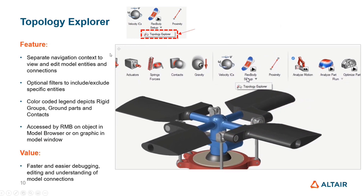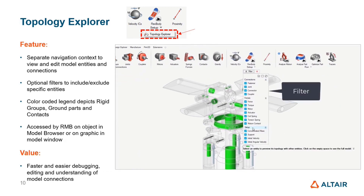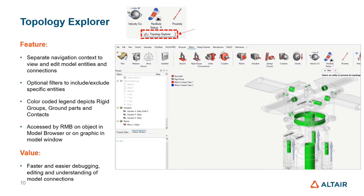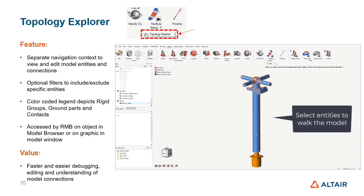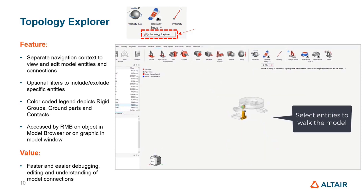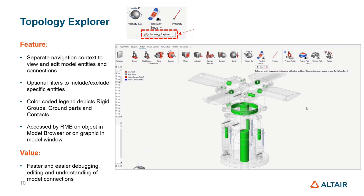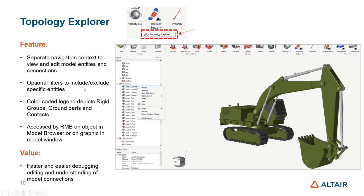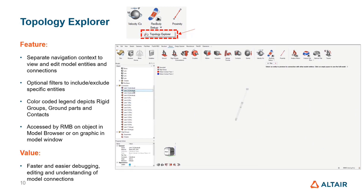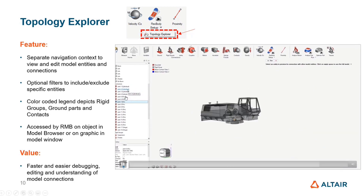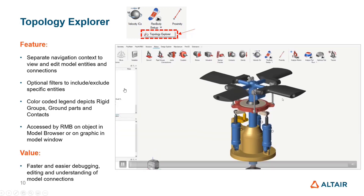We also have a new feature called the Topology Explorer. This allows you to graphically navigate the model and look at different connections. You can filter different entity types and see color coding for rigid groups, ground parts, and so on. Clicking on parts highlights associated entities. You can also click springs, actuators, and other elements to see the model structure. This is a great debugging tool for large models to understand connections and joints. You can also access it by right-clicking features in the browser and choosing Motion Topology Explorer.